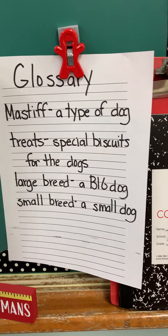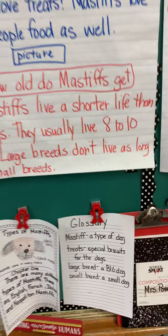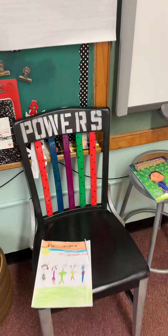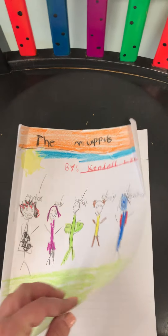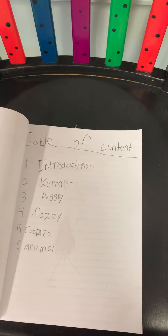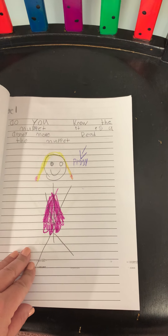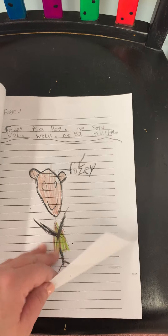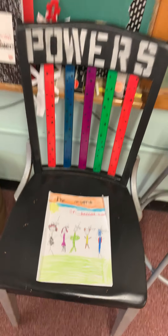Here's an example of my glossary with important words that you're going to read. Here is an example of an informational report that one of our students made. This informational report is about the Muppets. There is the cover, there is a table of contents, there is chapter one — page one, different characters — chapter two, chapter three, four, and five, all the way to the end of the book, which got stapled and will be hung in the hallway.